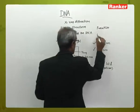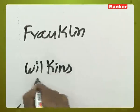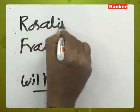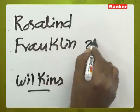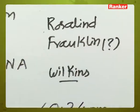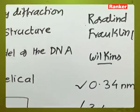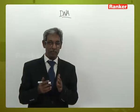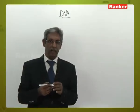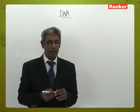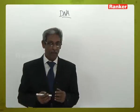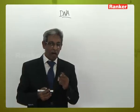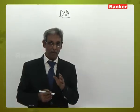Rosalind Franklin and Wilkins — it is important to note that Rosalind Franklin did not receive the Nobel Prize. Only Watson, Crick, and Wilkins received the Nobel Prize for the discovery of the DNA. Many of the statements and concepts you study in DNA are individually and collectively important bits for multiple choice questions.